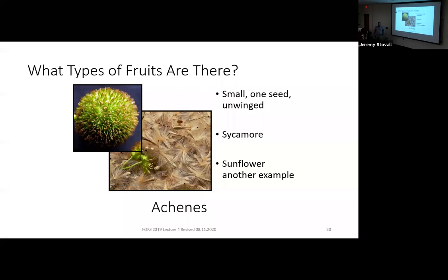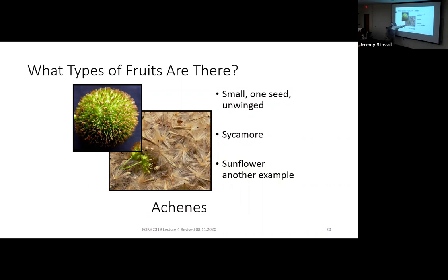Starting with the simplest fruit: an achene. A good example is the American sycamore, where each little dot is one achene — a bunch of achenes stuck together. A sunflower seed is also an achene. Basically with an achene, the fruit is not much more than the seed.